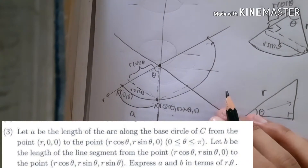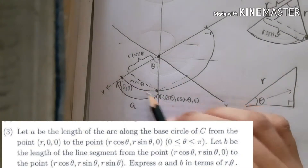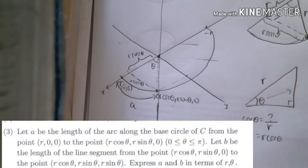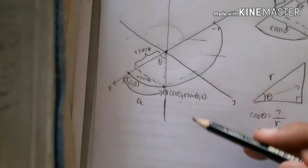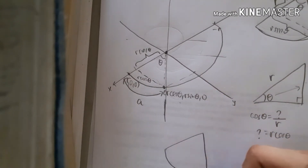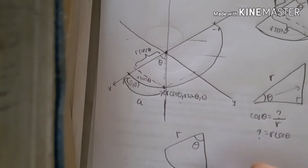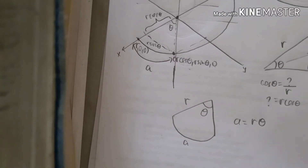The interval is from zero to pi, and since pi is 180 degrees, we only draw a half circle. Let's ignore B first. They say to express A in terms of R and theta. By the basic formula of a circle, when we redraw this with angle theta and radius R, the arc length is simply R theta. That's the arc length formula from A-level mathematics — the arc length is R theta.